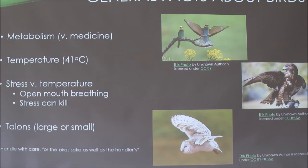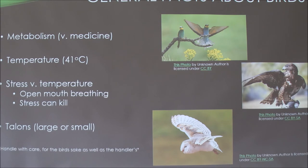Birds' temperature generally runs around 41 degrees Celsius, just a little over 100 Fahrenheit, and combined with their metabolism that requires a lot more energy to maintain. Birds can also be easily stressed, which can increase their temperature, and anything over 46 degrees Celsius is going to be fatal to the bird, so it's best to keep it down.